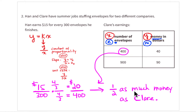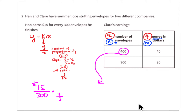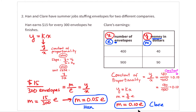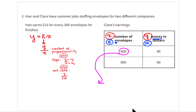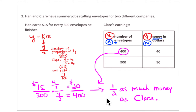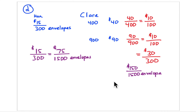That result is consistent with the equations — Claire makes twice as much as Han, and Han makes half as much as Claire. For 1,500 envelopes, you can use Han's equation: 1,500 envelopes × $0.05 = $75. Or using the ratio: $15 for 300 envelopes, multiply both by 5 to get $75 for 1,500 envelopes.